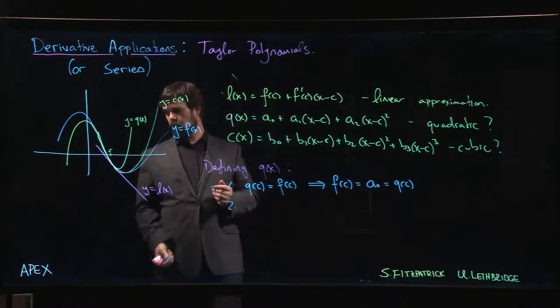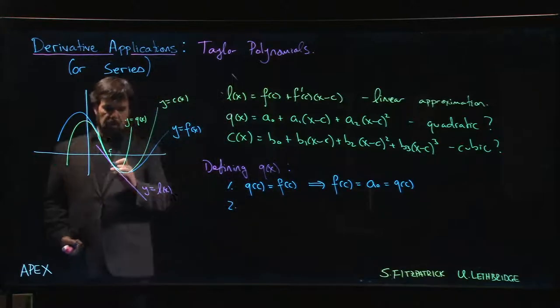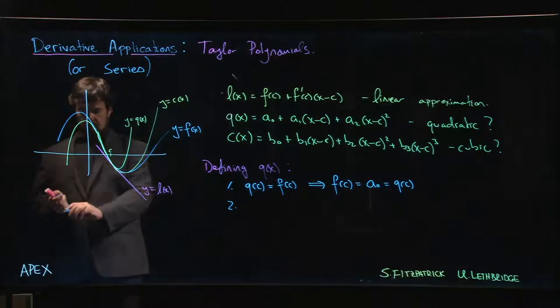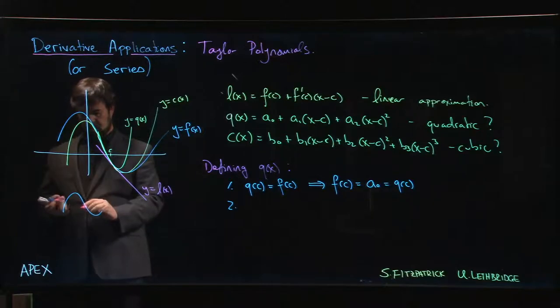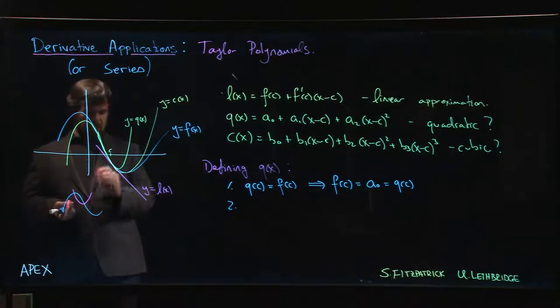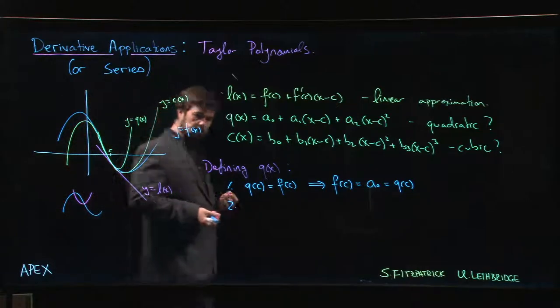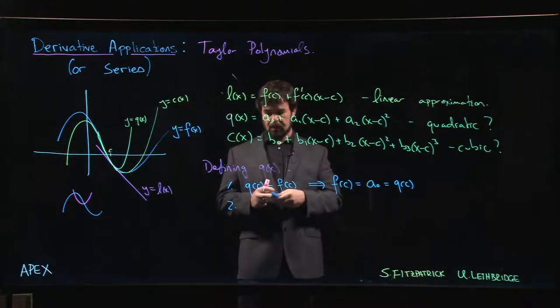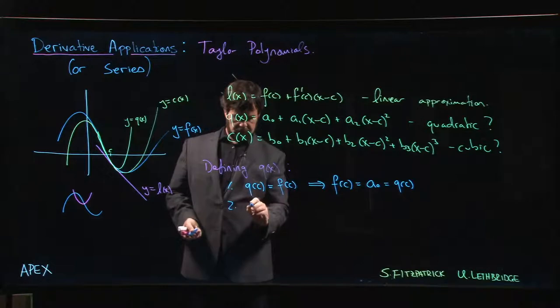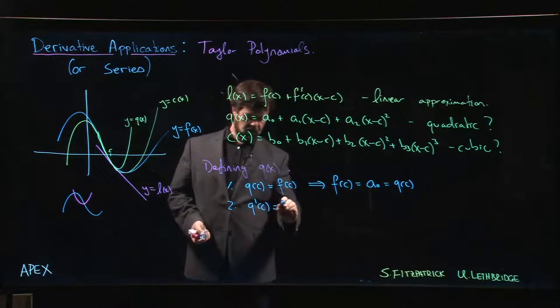Well, we probably want them to have the same tangent line at that point. We want them to have the same slope as they pass through. If I had my curve and I was trying to approximate by a quadratic that agreed at that point but the slopes didn't agree, I'd probably have something that's not going to be a good approximation. So the two curves should be tangent to each other at x equals c. Well, how do I guarantee that the curves are tangent to each other? Their first derivatives should be equal, so Q prime of c should be equal to F prime of c.